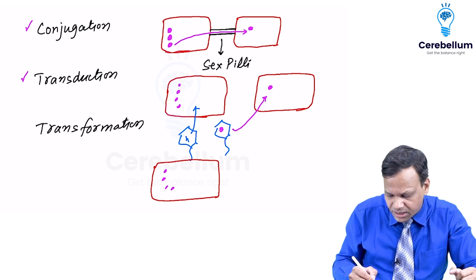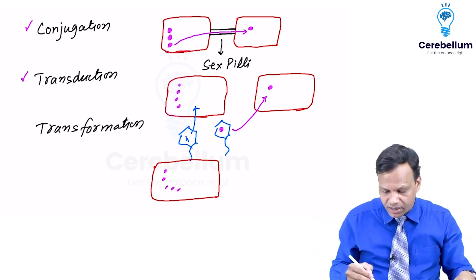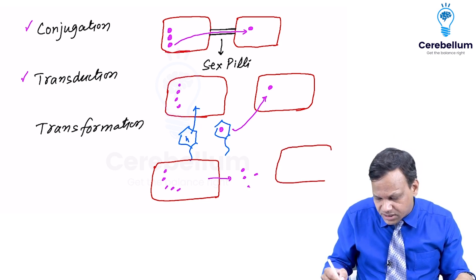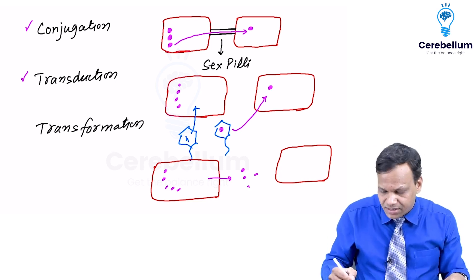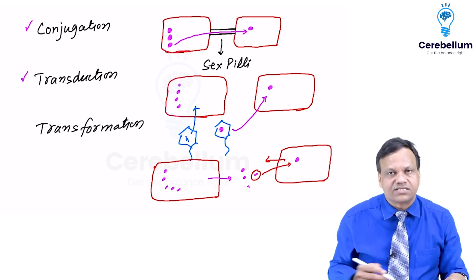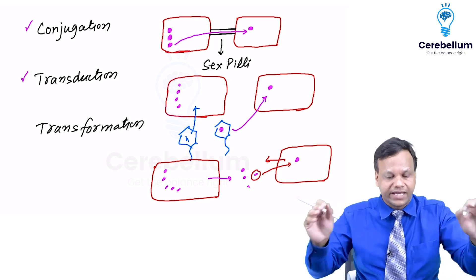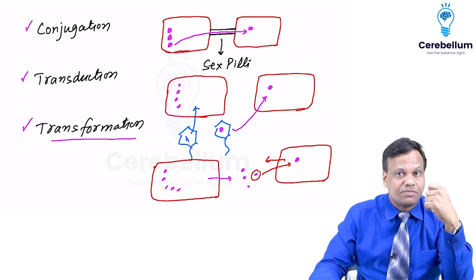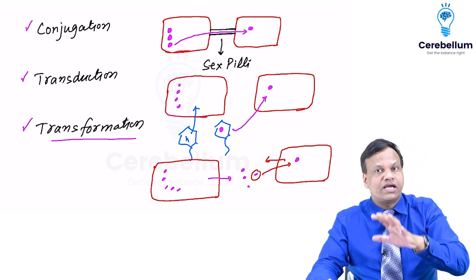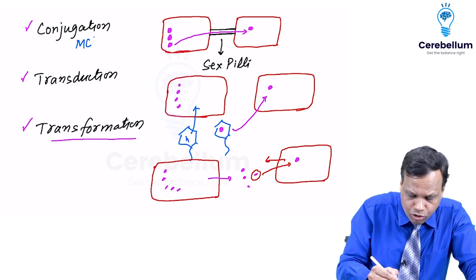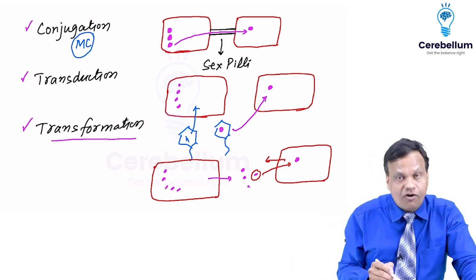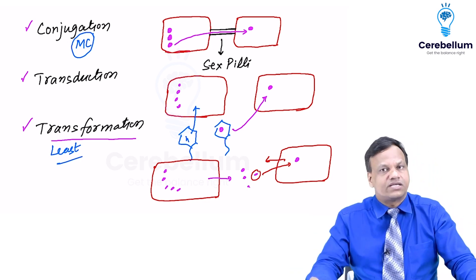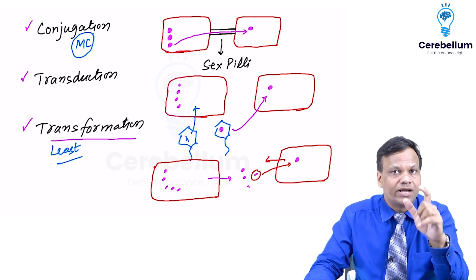The third method is transformation. A resistant bacteria roaming around accidentally releases its genes into the environment — free environmental DNA. A second non-resistant bacteria picks up these free genes and acquires drug resistance. So transformation means resistance transfer through free environmental DNA. To summarize: conjugation is the most common method, while transformation is the least common because free environmental DNA is not easily available.